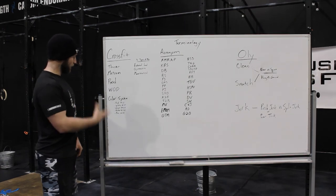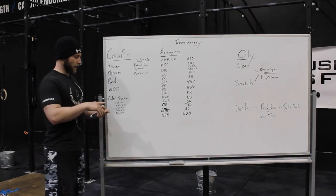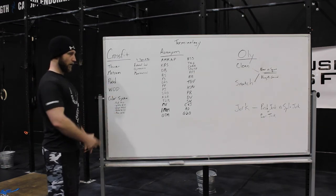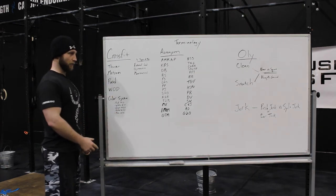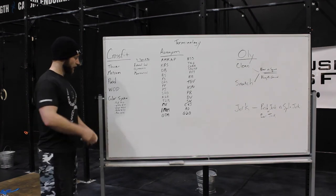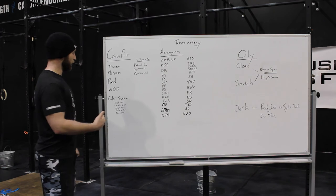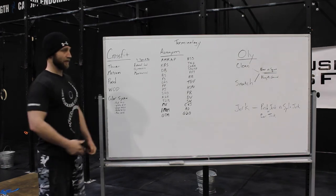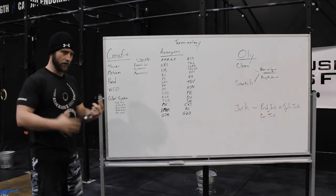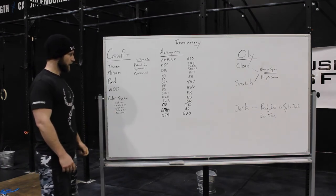The color coding system for weights: anything with paint or tape on it typically has a specific weight. Red is 10 pounds, white is 15, green is 25, yellow is 35, blue is 45. This applies to barbells, kettlebells, and plates — anything that has that color on it.